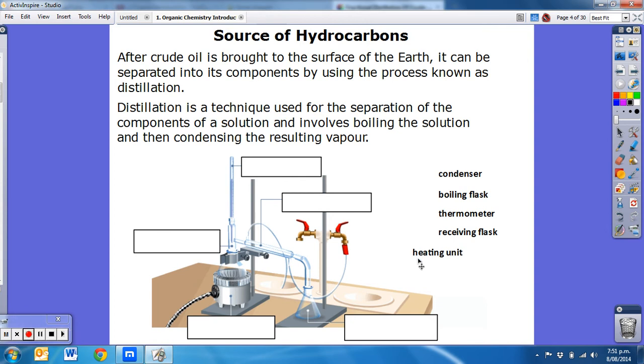So this setup has a heating unit, a boiling flask. Your mixture of liquids are in the boiling flask that's heated up. There's a thermometer in the top of that boiling flask, so as the liquid's heated and gases form, gases come off at different boiling points.